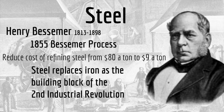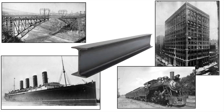Steel now becomes much more affordable, it's a better product — lighter than iron and stronger than iron. Steel replaces iron as the major building block of this second phase of the industrial revolution. We're going to use it for everything: wider and longer bridges, taller and bigger buildings. Steel allows us to build wider structures that can hold up taller structures, so buildings begin to get taller. We're going to use it on our steamboats and on our railroads. Steel becomes the major building material of the second industrial revolution.